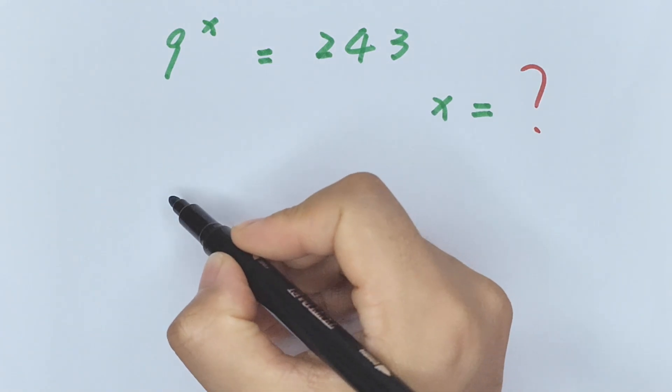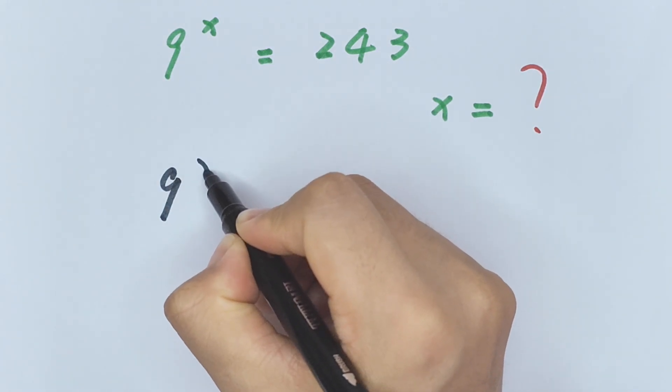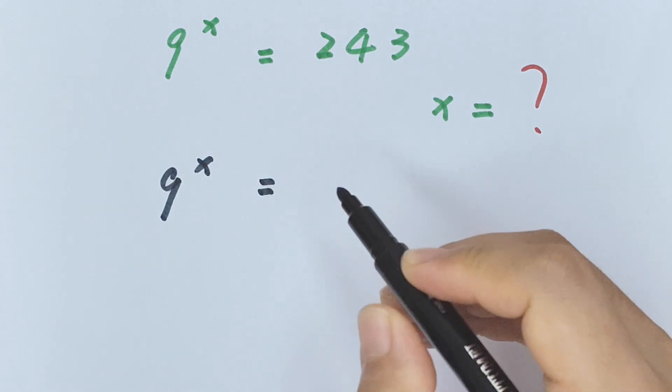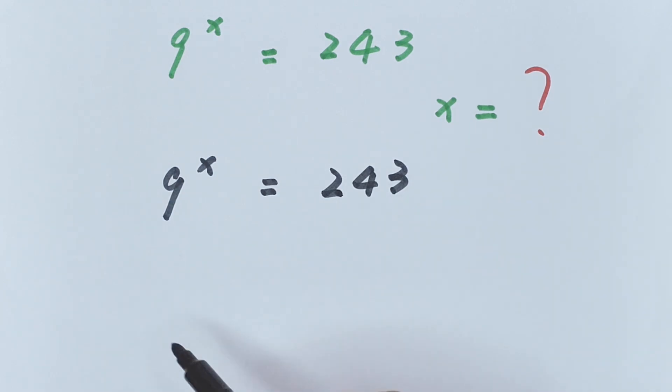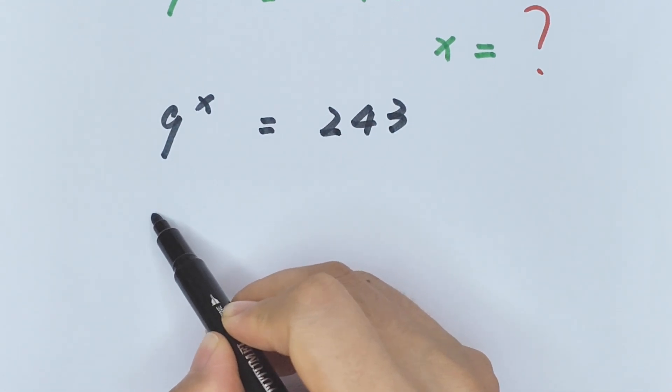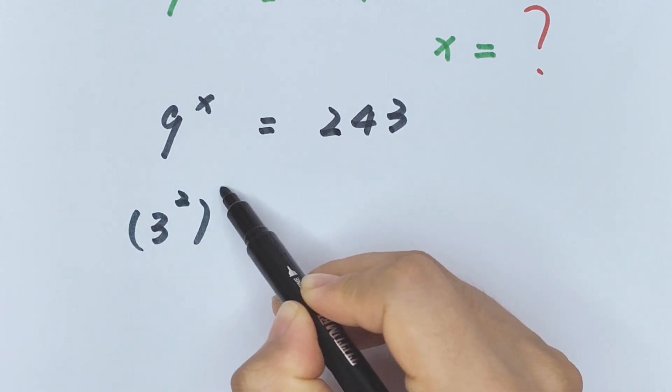9 to the power of x equals 243. 9 is the same as 3 squared, bracket to the power of x, equals 243.